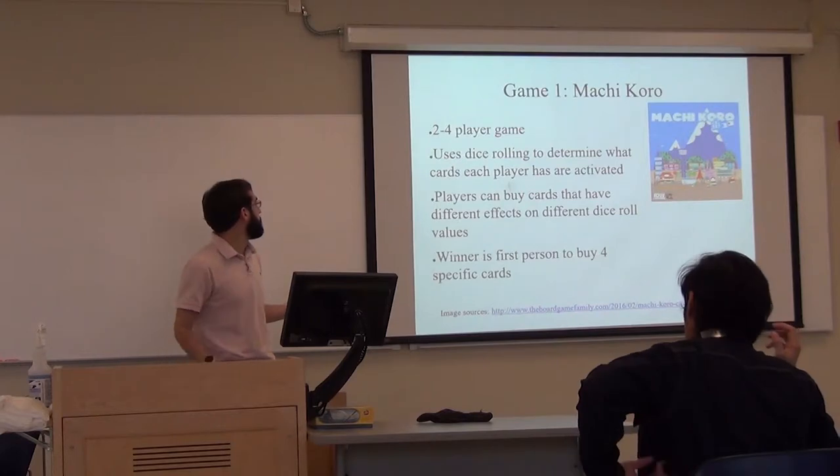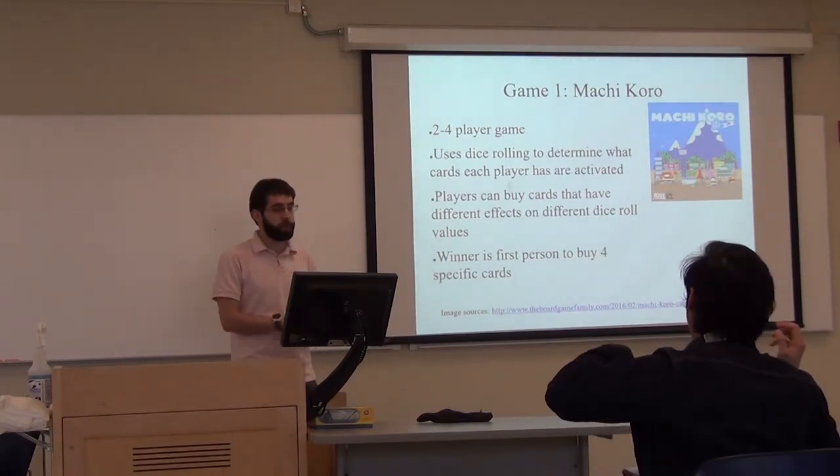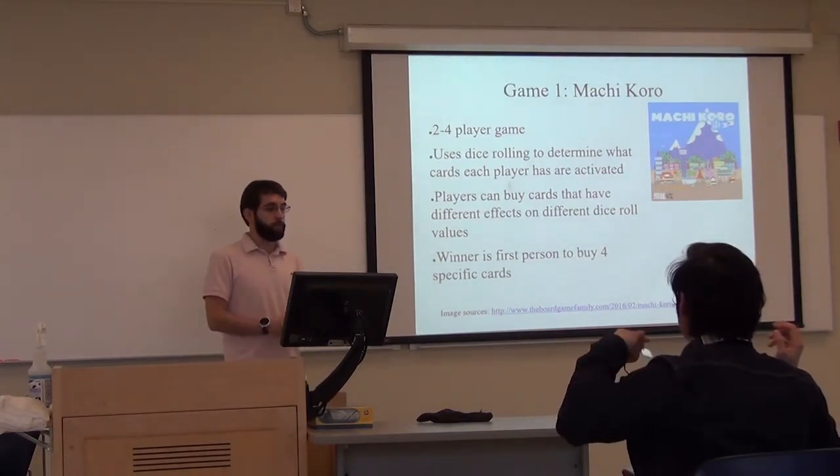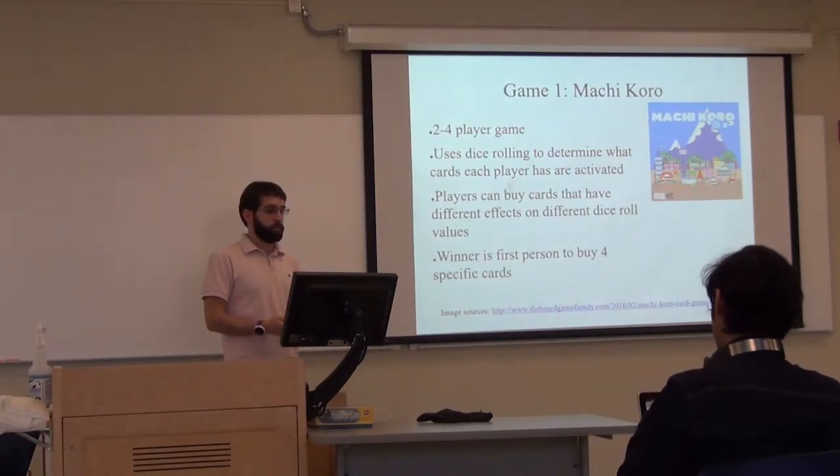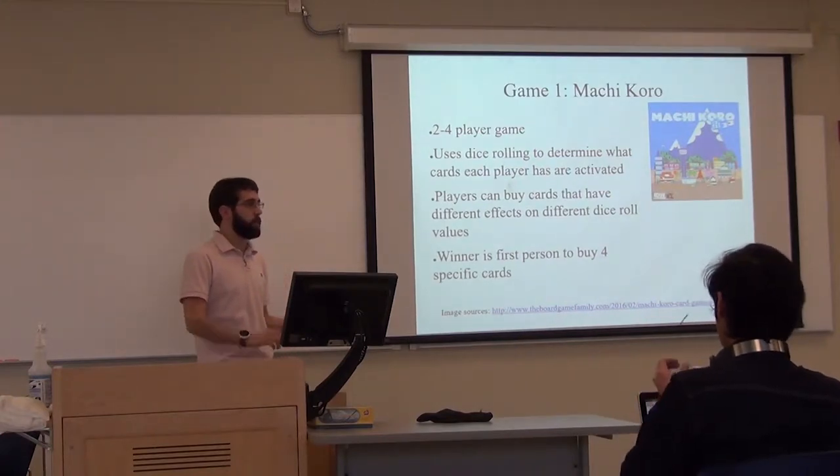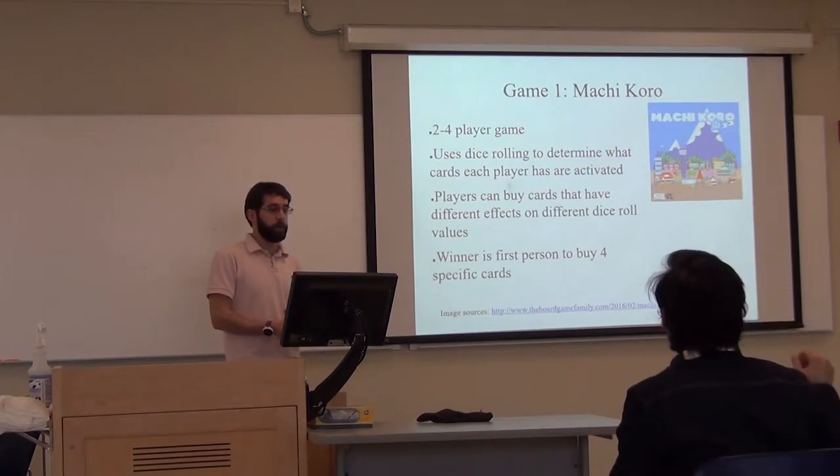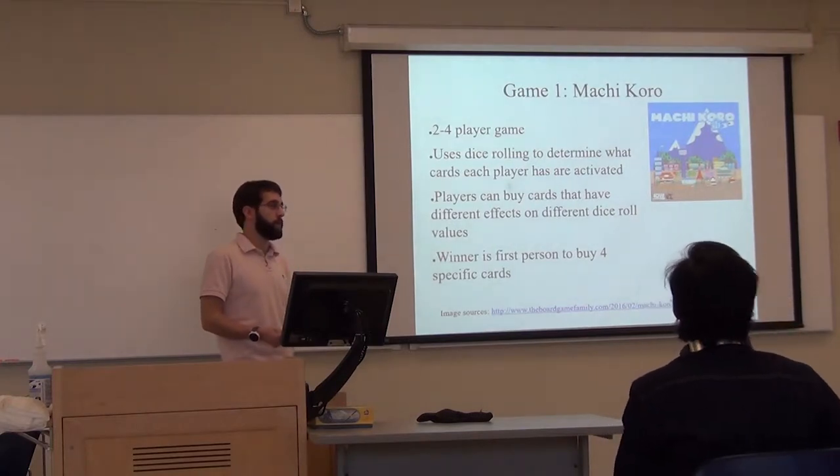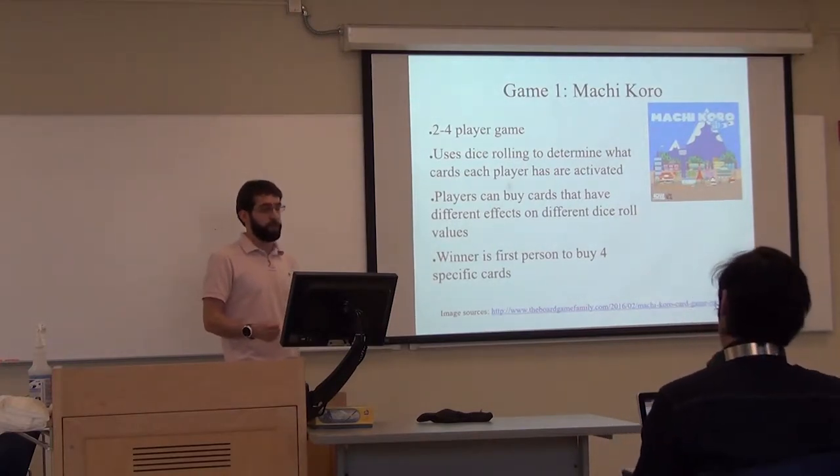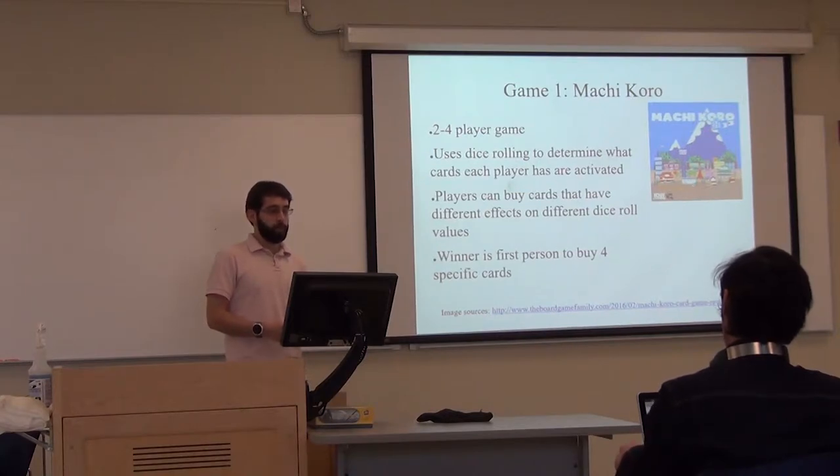First game, I simulated this game called Machi Koro. It's a two to four player game. It uses dice rolling to determine the outcome of each turn. At the end of each player's turn, they can buy cards that have different effects based on the dice roll. To win the game, the player simply has to be the first to buy four specific cards.